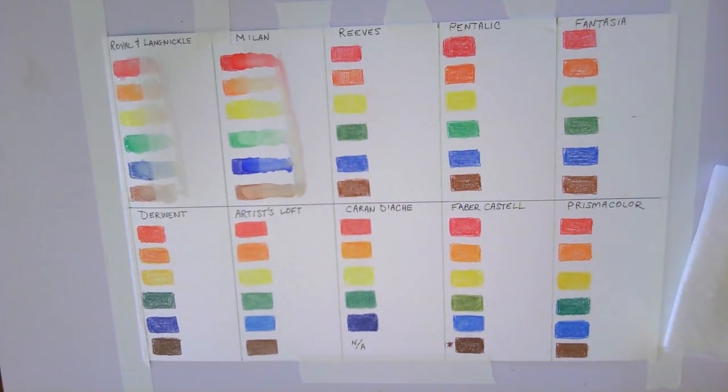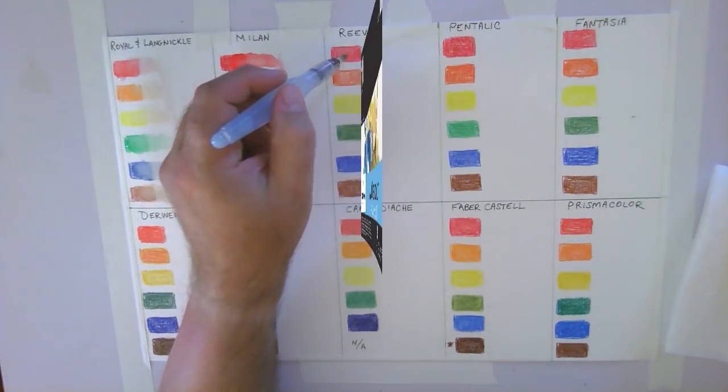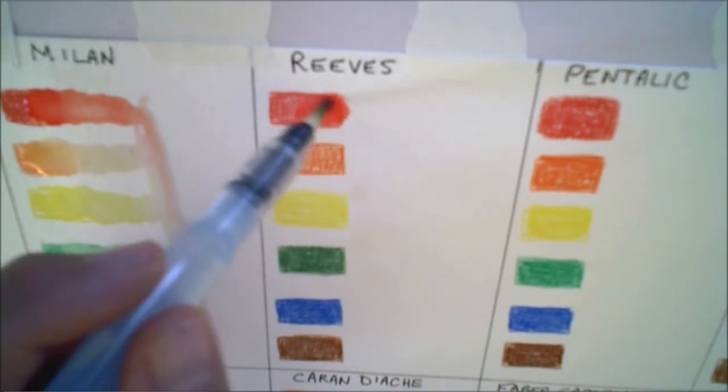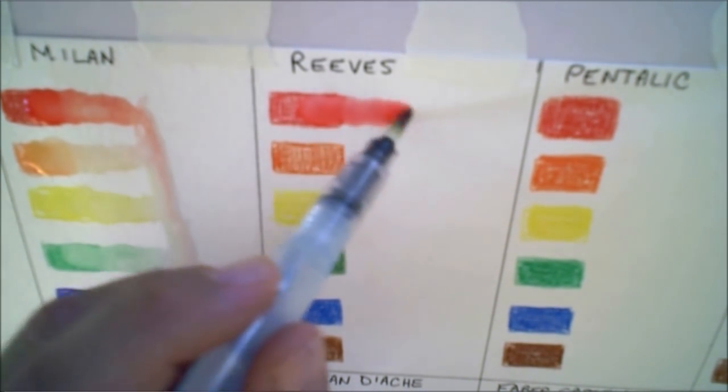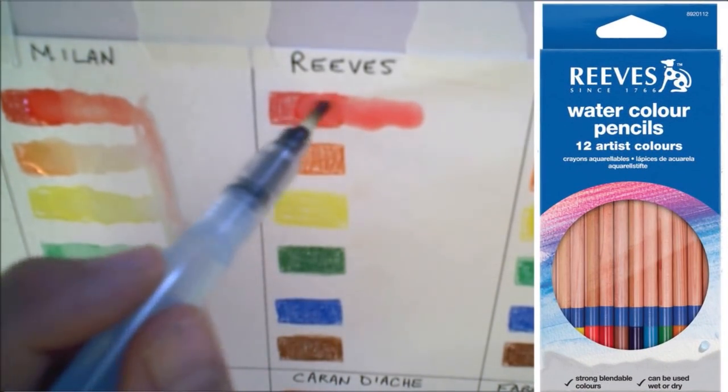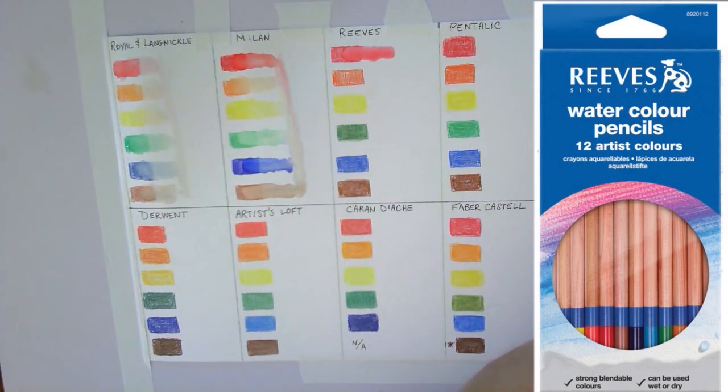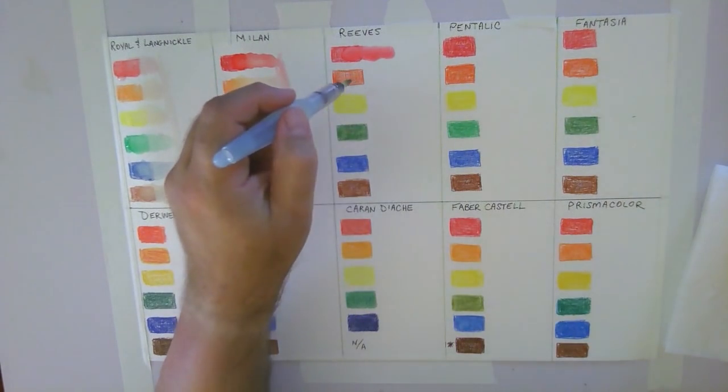And finally, before moving on to the next watercolor set of pencils by Reeves, I just wanted to point out that the watercolor paper I'm using is by Canson. It's a 140-pound paper called Montval. Next are the watercolor pencils from Reeves. Reeves' name has been around since 1766, where they originated in England. They were acquired in the 20th century by another company, but they still use the Reeves' name today. The set only cost me about $8 for a set of 12.